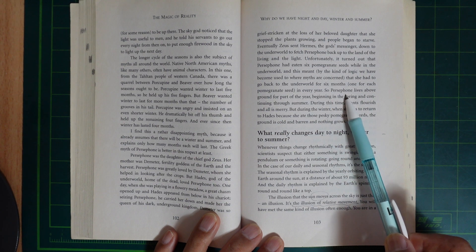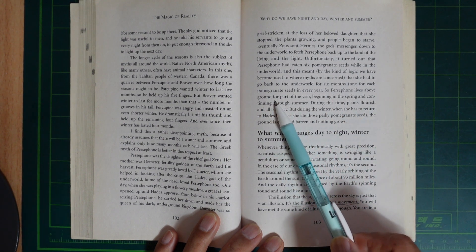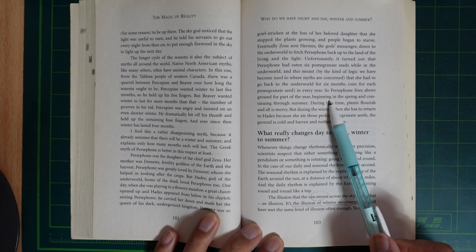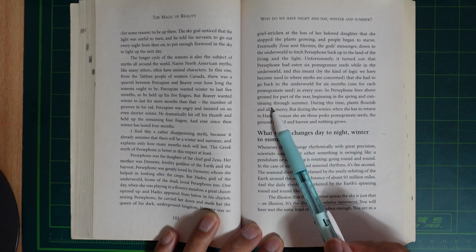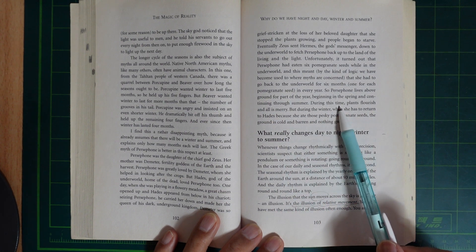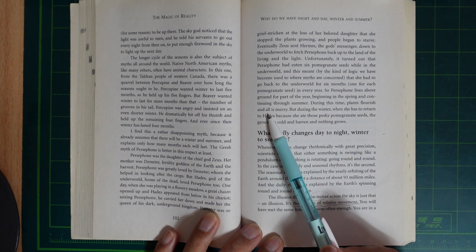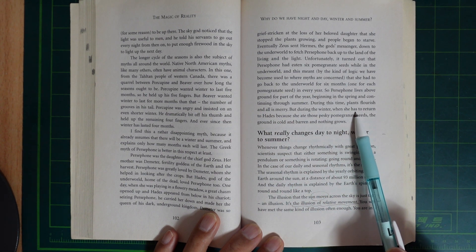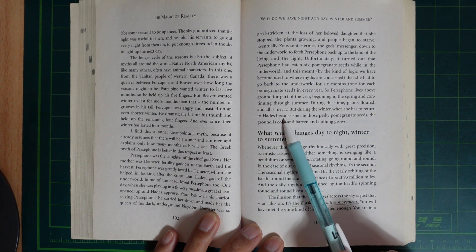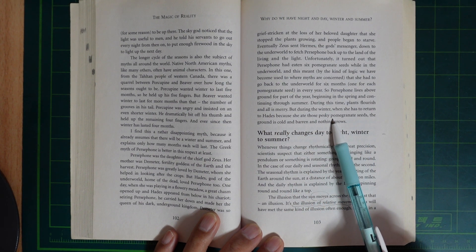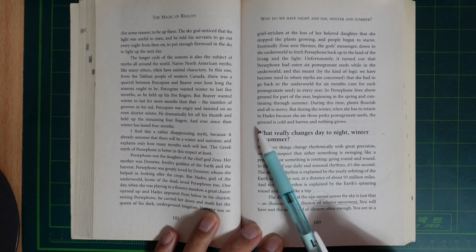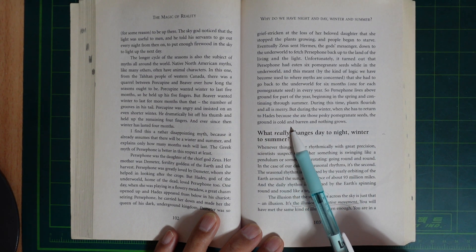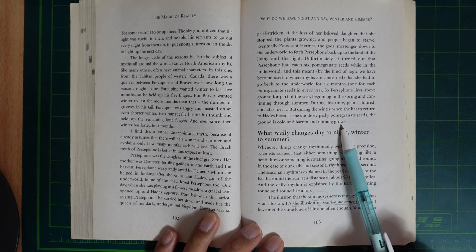And every year, Persephone leaves the underground for part of the year, beginning in spring and continuing through summer. During this time, plants flourish and all is merry. But during the winter, when she has to return to Hades because she ate those pesky pomegranate seeds, the ground is cold and barren and nothing grows.